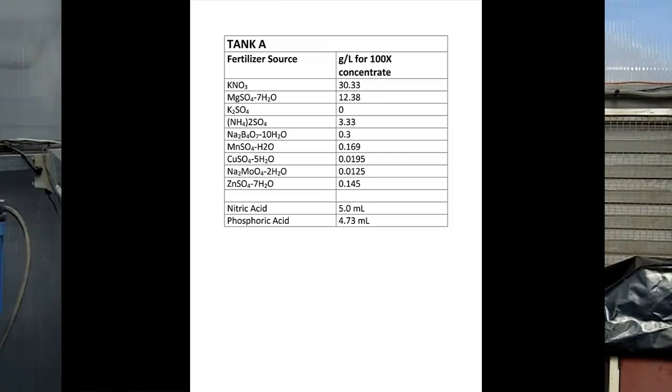We're adding magnesium sulfate. We're adding that at about 12 grams per liter. And then we're adding ammonium sulfate as our ammonium source at a little more than 3 grams per liter.